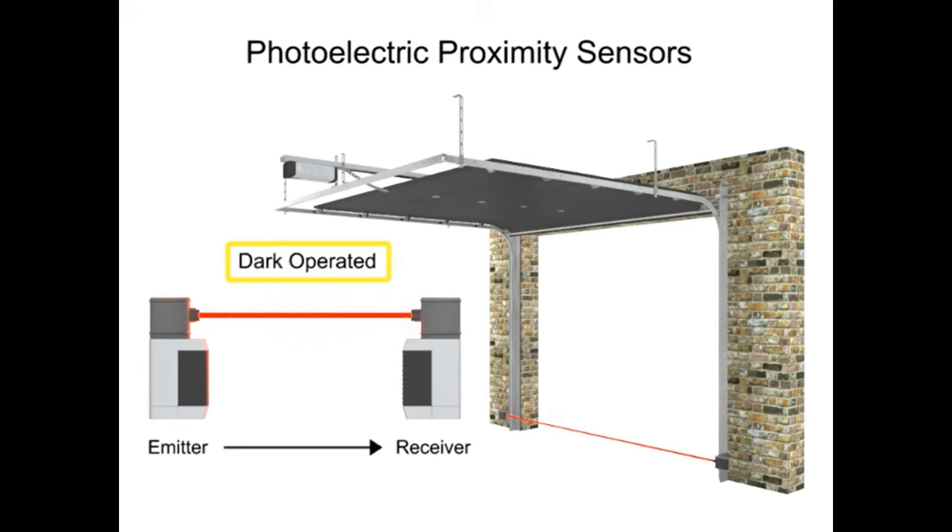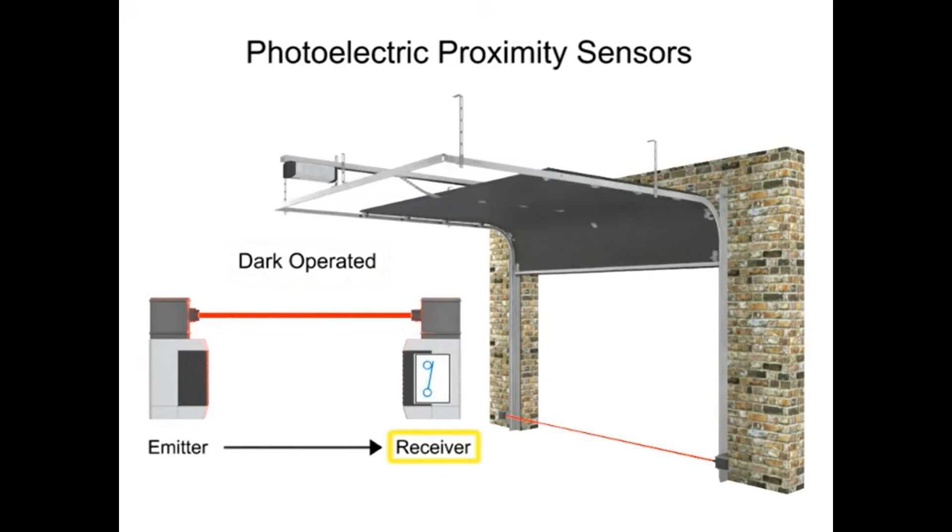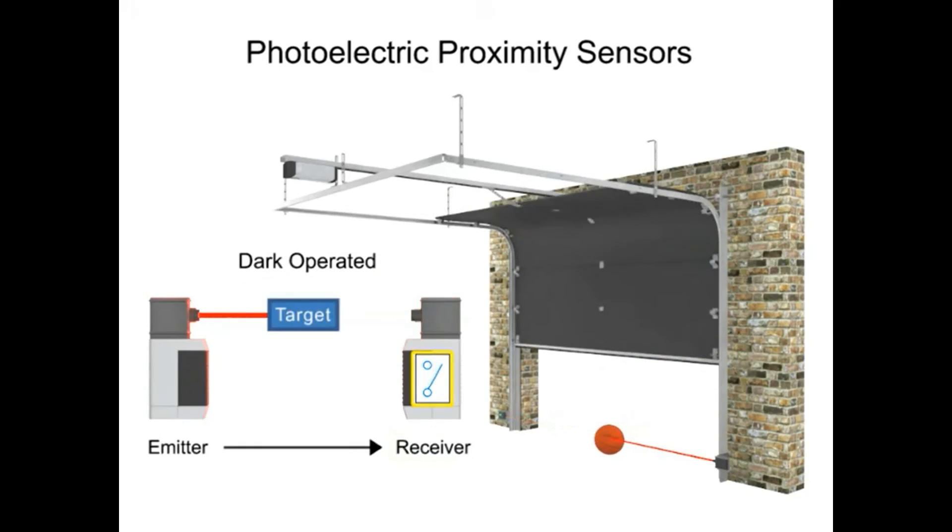In this dark operated mode example, the beam of light is being received by the garage door receiver. When a target enters the beam of light, it activates the switch, which will stop the garage door from closing.